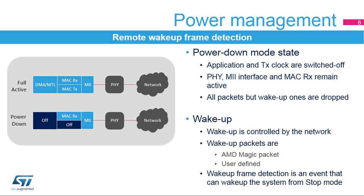A functional low-power mode enables power consumption saving by stopping the DMA and transmit path clocks. The received path of the peripheral remains active in order to detect special wake-up packets, enabling a system wake-up from sleep or stop mode controlled by the network.